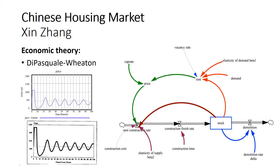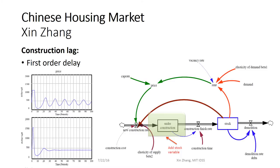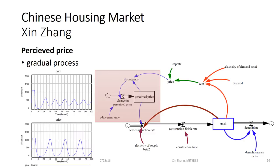He added an under-construction stock, which is a first-order delay, and showed that this dampens out price fluctuations. Something different he added was the perceived price — the fact that when prices change, people only start realizing it later, which is a gradual process — and this actually accelerates the price fluctuations. Really interesting.